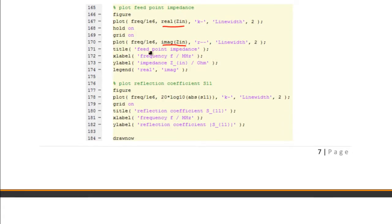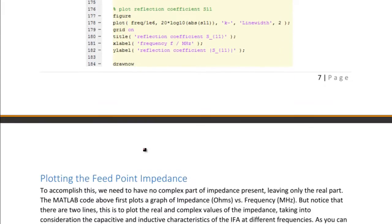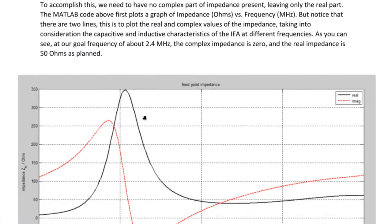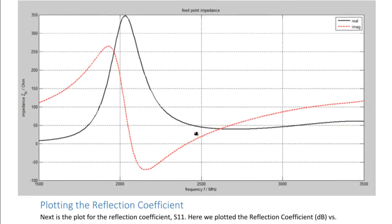So, plotting the feed point impedance. Now, once you see the graph, here's the real part and here's the imaginary part, because it says in the legend there. So just notice that at the desired resistance of 50 ohms, we have our desired frequency of 2.4 GHz, and the imaginary impedance is approximately zero.